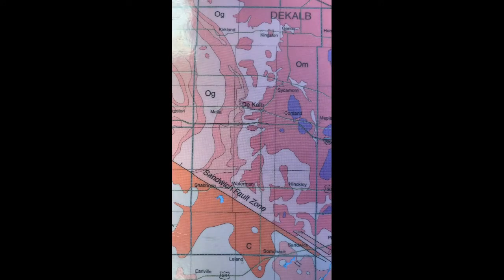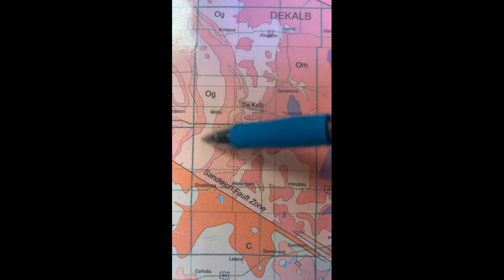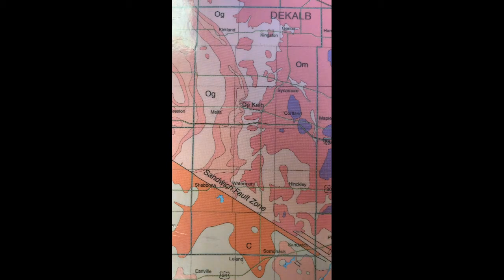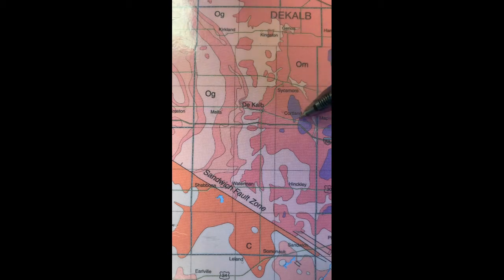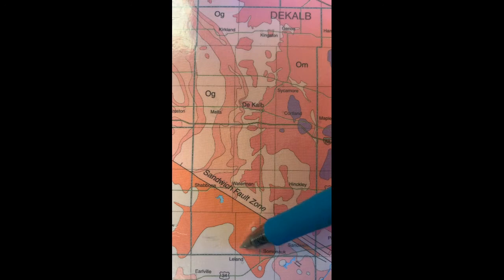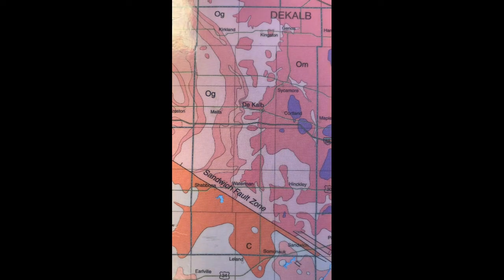Here we are in part two — bedrock geology of Illinois — specifically looking at the formations in DeKalb County. The first question asks how many different formations are mapped in DeKalb County. The boundary of DeKalb County runs along here, making it a tall, thin county. Going through and counting all the different formations: OG, OP, OA — that's three; OM is a fourth; SU is a fifth; C is a sixth; and OPDC is a seventh. So there are seven formations mapped in DeKalb County.